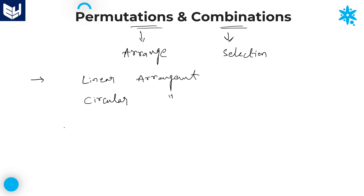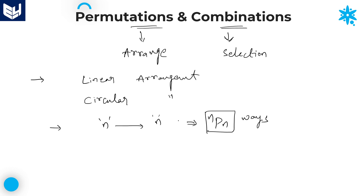In linear arrangement, if there are n objects and you want to arrange all n objects, then it can be done in nPn ways. For example, if there are 4 chairs and I want to arrange 4 persons in these 4 chairs, I can arrange them in 4P4 ways. 4P4 is equal to 4 factorial. In general, nPn is equal to n factorial — both are the same.